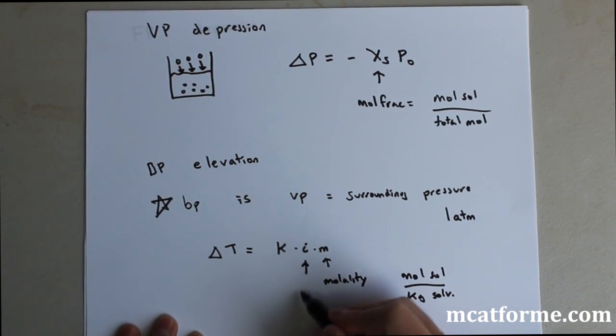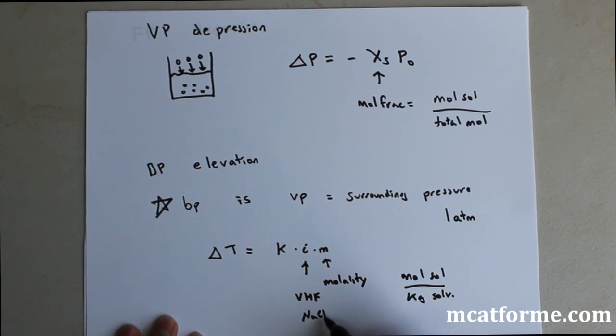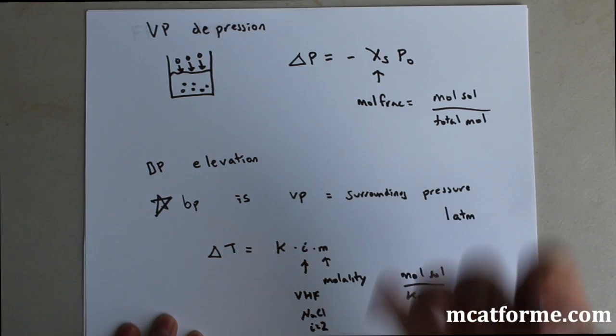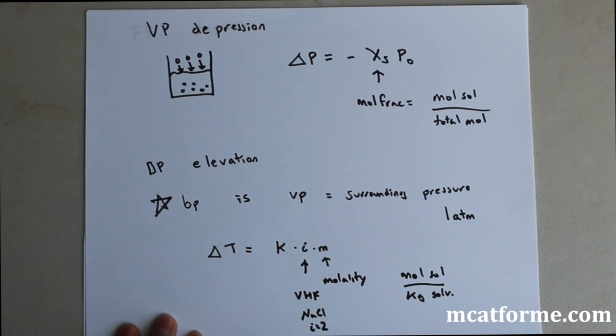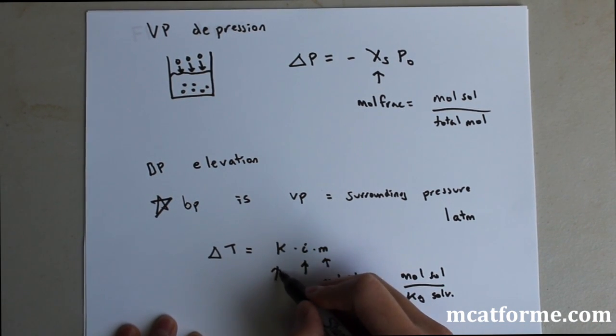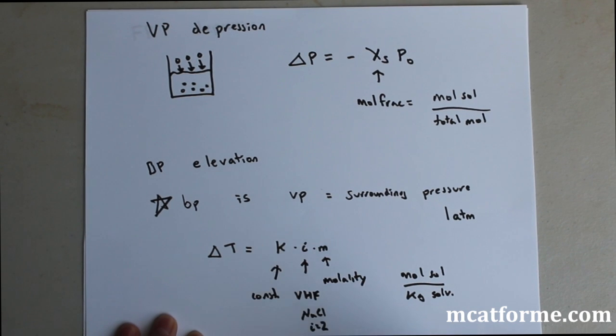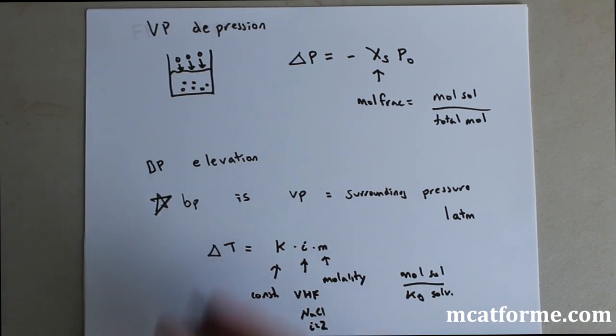This i is the van't Hoff factor. For example, NaCl, the van't Hoff factor equals 2. It's the amount that the certain solute will dissolve in water. This is a constant. Your delta T is kim. You just multiply those across, and it will be the change in boiling point. It will always be an increase.